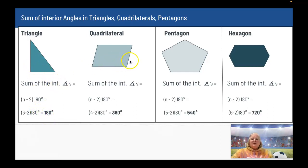When I get to the quadrilateral, the formula says I have 4 sides now, and 4 minus 2 is 2, and 2 times 180 degrees is 360 degrees.